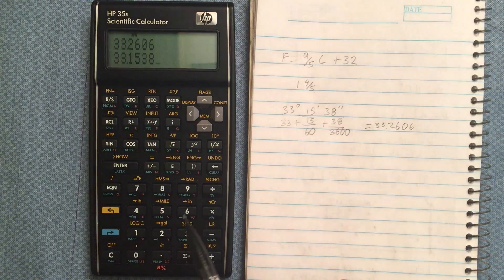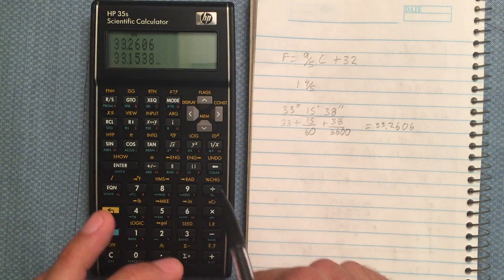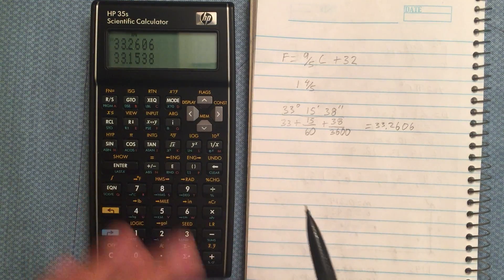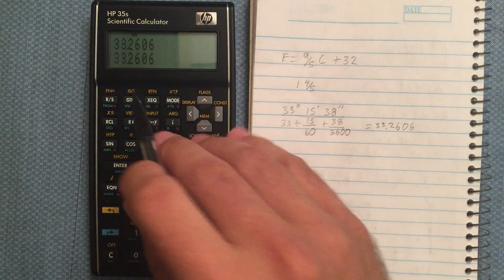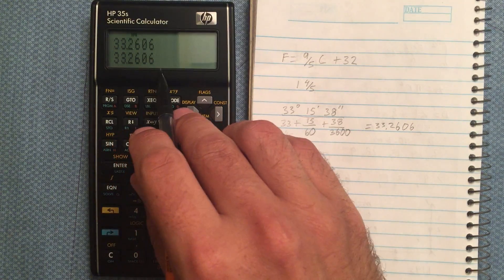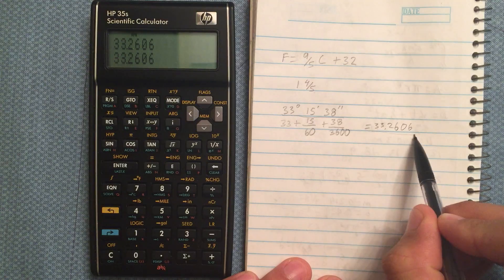And then to convert that to decimal, I go from hours, minutes, seconds to decimal. So, gold shift, and then that. And that gives me 33.2606, which is what we calculated.